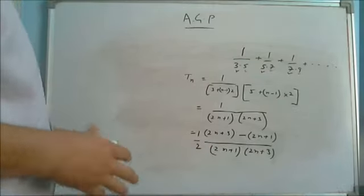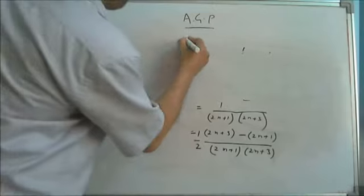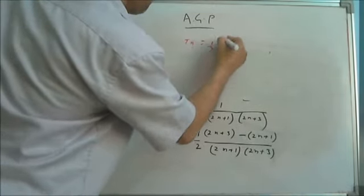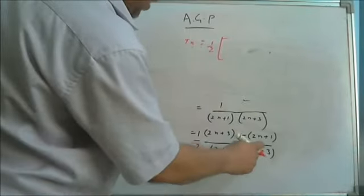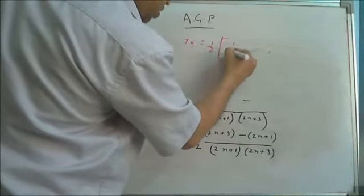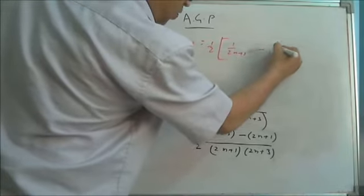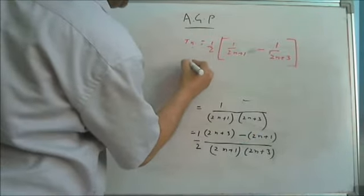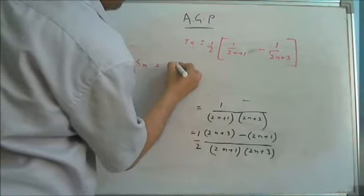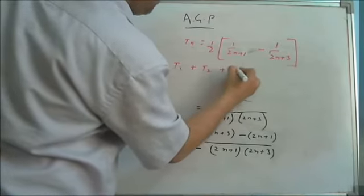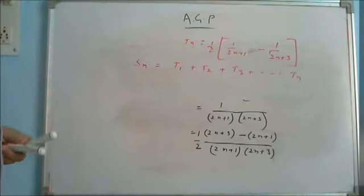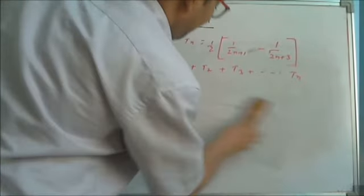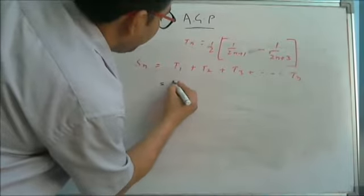Ultimately, the series is going to follow the pattern of writing — separating it. It will give you (1/2) × [(1/(2n+1)) − (1/(2n+3))]. Now very easy. We will follow the basic thing: Sₙ = T₁ + T₂ + T₃ + ... + Tₙ, which is the sum of all the terms. T₁ can be found out easily by putting n=1 in the given expression. It is coming out to be (1/2)×[1/3 − 1/5].